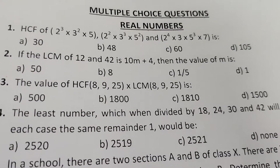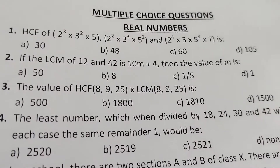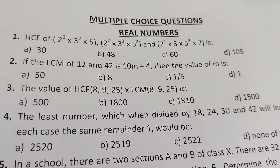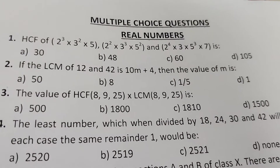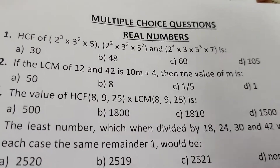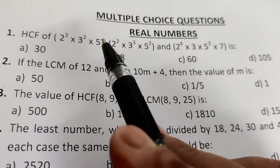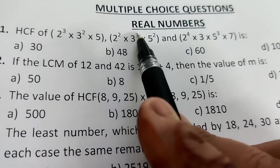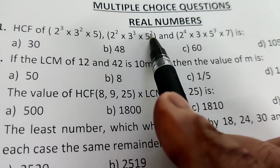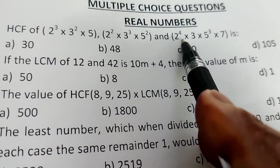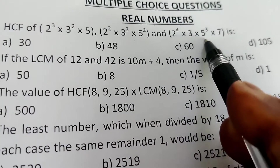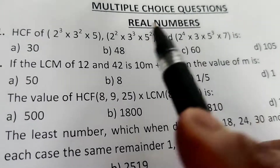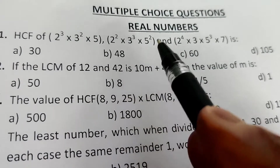Multiple choice questions for Class 10, Chapter Real Numbers, related to HCF and LCM. Question 1: HCF of 2³ × 3² × 5, 2² × 3³ × 5², and 2⁴ × 3 × 5³ × 7.